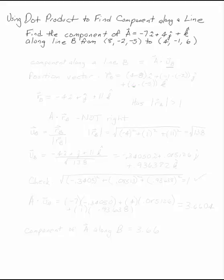The first thing to notice is that a component along the line B is the dot product of A and the unit vector along the line. So what we need to do is find this unit vector and then we can take the dot product with A.